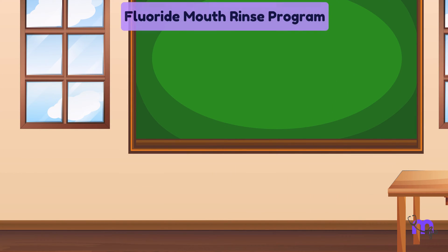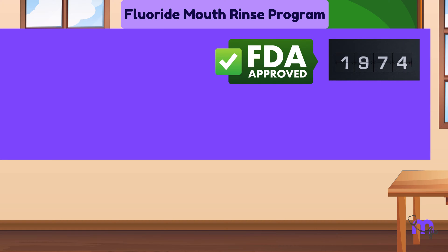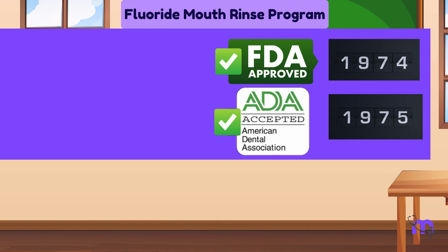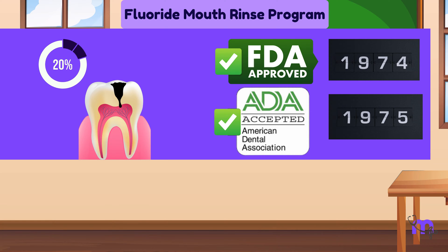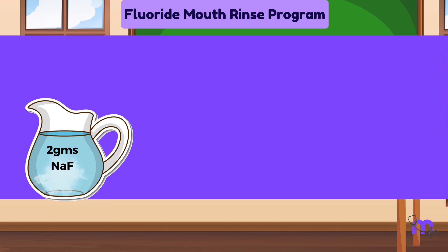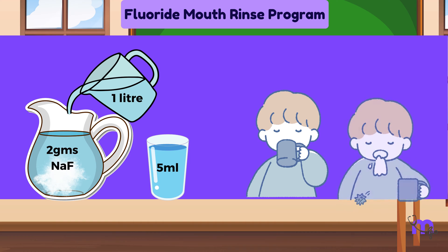The fluoride mouth rinse program received official recognition of safety from the FDA in 1974 and by the Council on Dental Therapeutics of the ADA in 1975. This program led to a decrease in dental caries occurrence by 20% to 40%. Here, 2 grams of sodium fluoride powder is placed in a jug, to which 1 litre of water is added. 5 ml of this rinse is then dispensed into a cup, and all children are instructed to rinse with this solution for 1 minute.